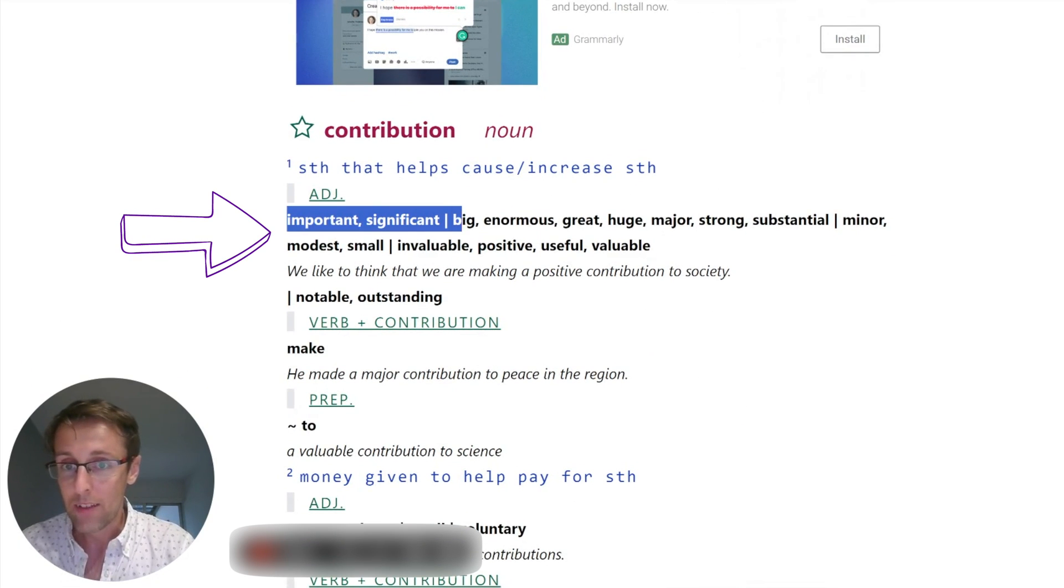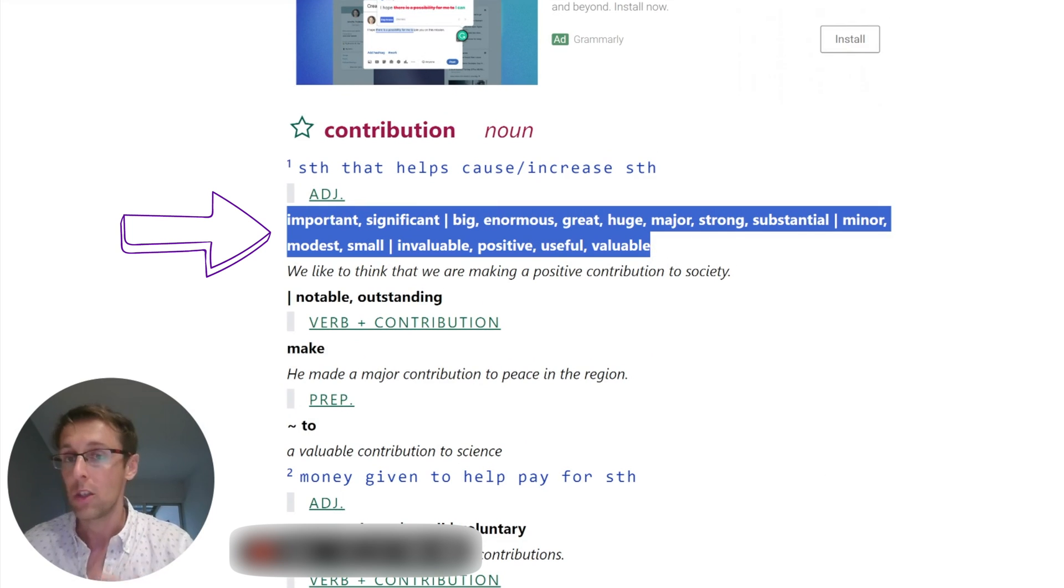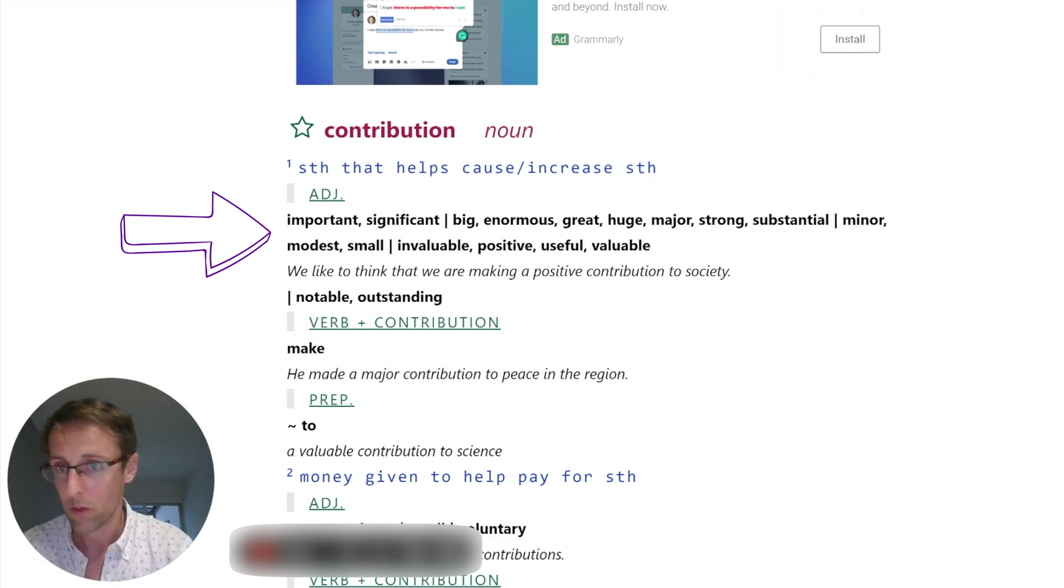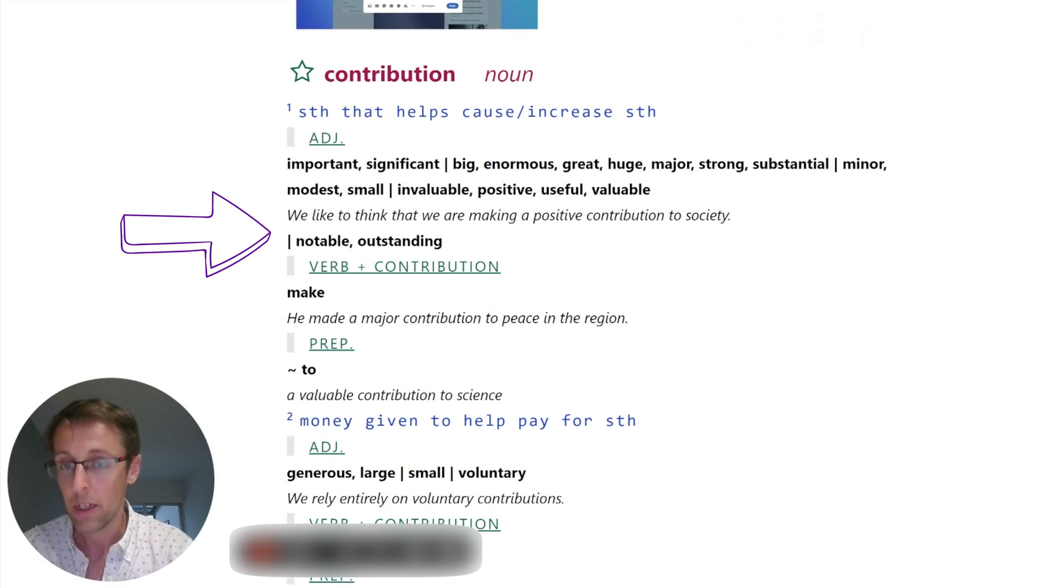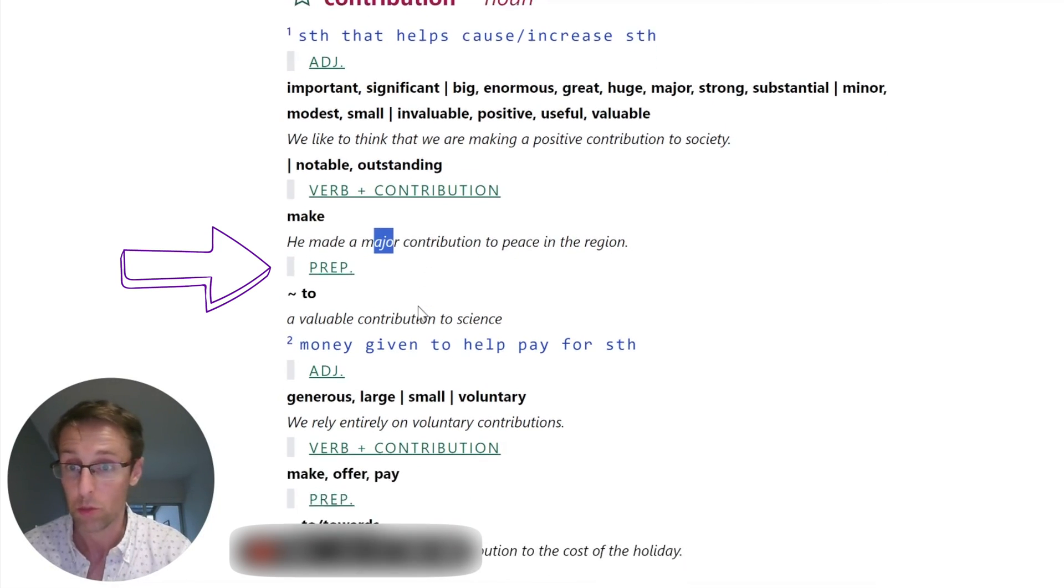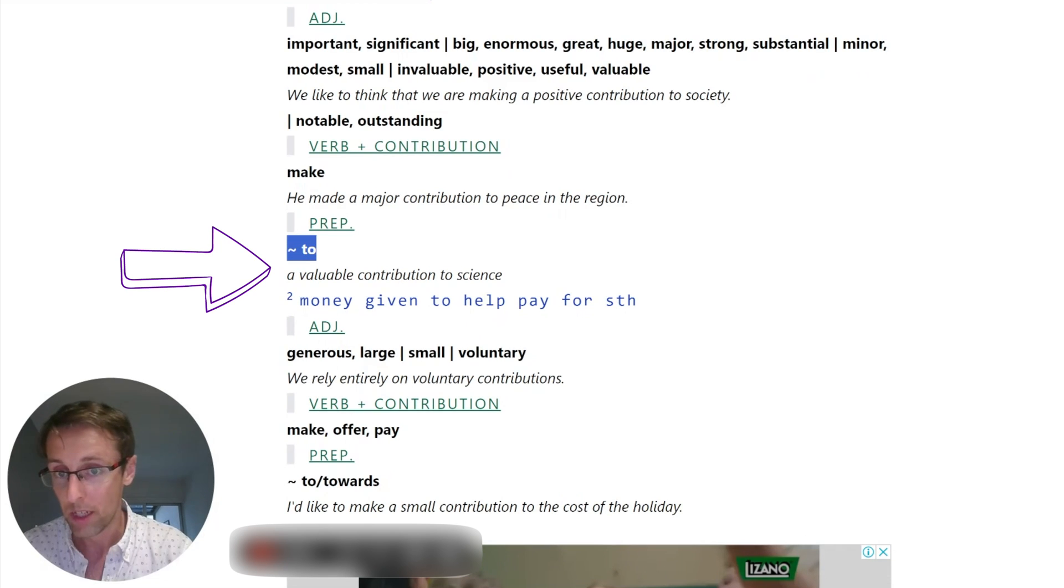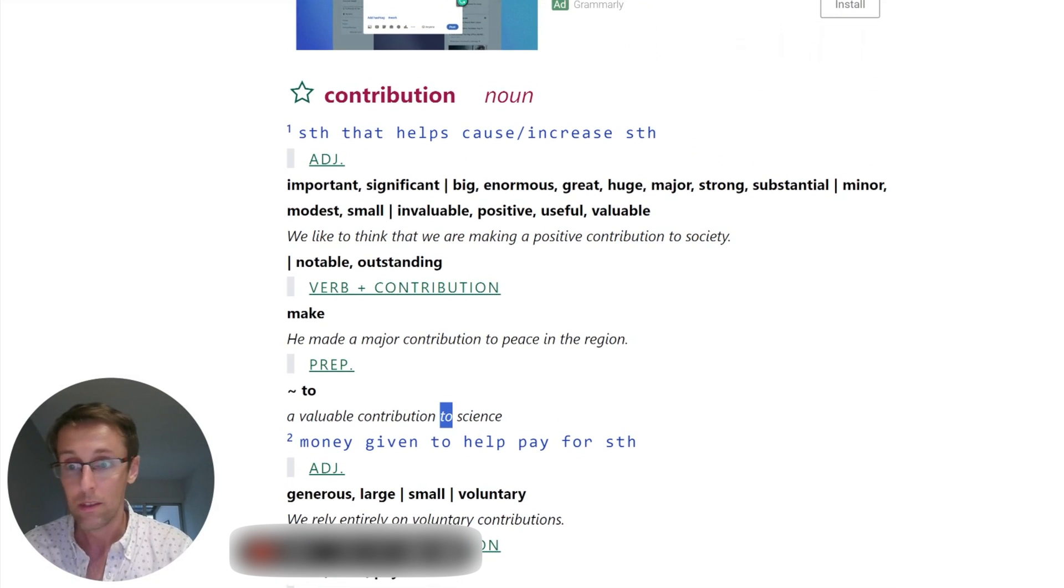First of all, you're going to get adjectives that are frequently used with this word. So, for example, important, significant contribution, notable, outstanding, and so on. You're going to get the verb - so verb plus contribution meaning make. So you can make a major contribution, let's say, or you can make an important contribution. And then you're going to get the preposition as well. That it's to, it's not of, it's not at or anything else, it's to. So this is really helpful in that sense.